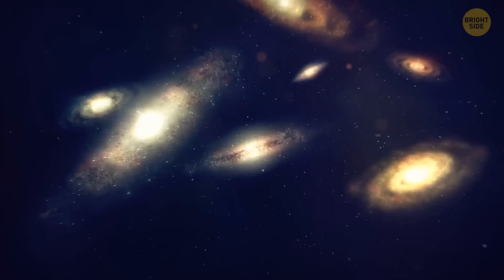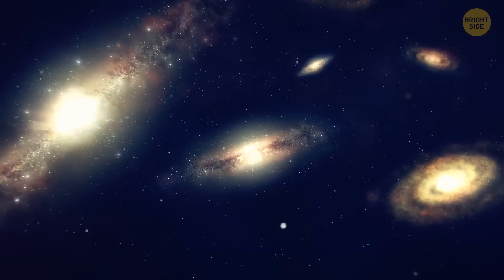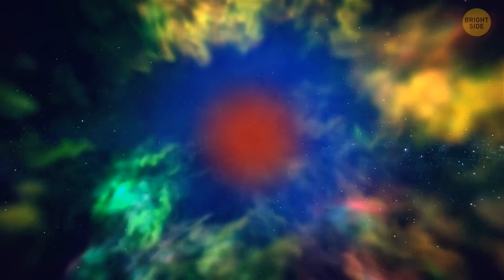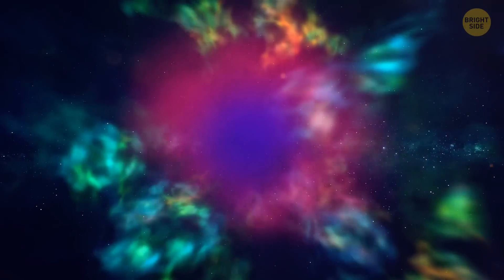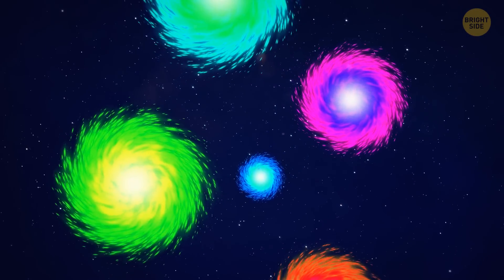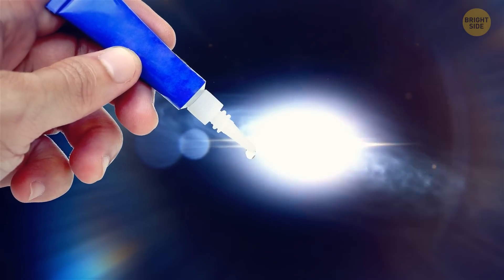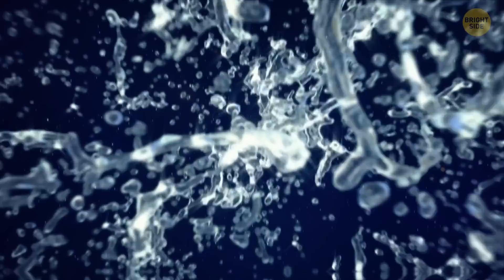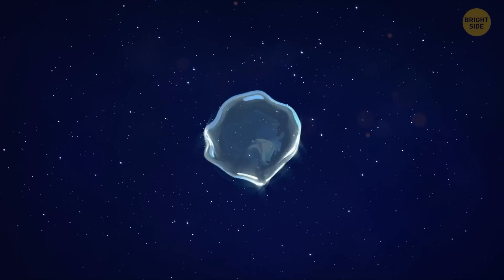One day we noticed that our understanding of how galaxies were created was incorrect. According to our calculations, they should have been some chaotic gas. But something held them together, turning them into spirals. Like some kind of invisible glue. Then we thought, maybe this invisible glue really exists.